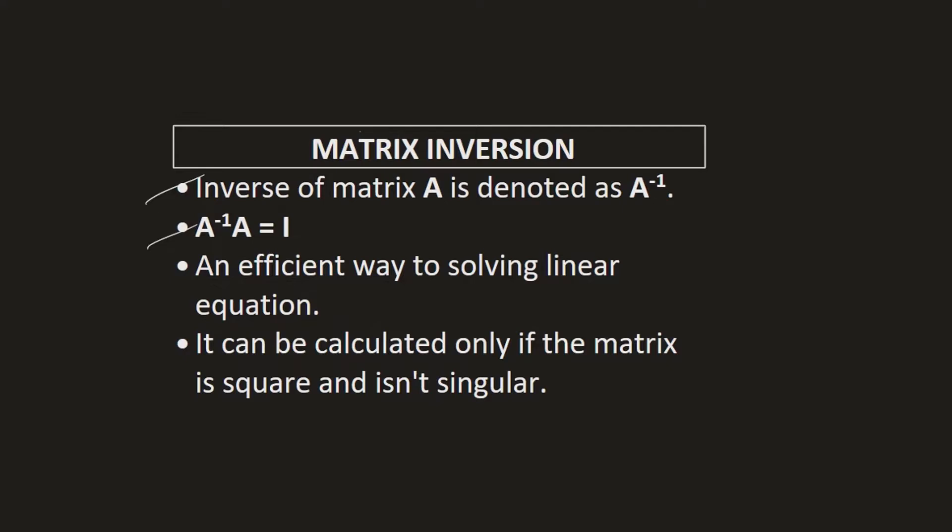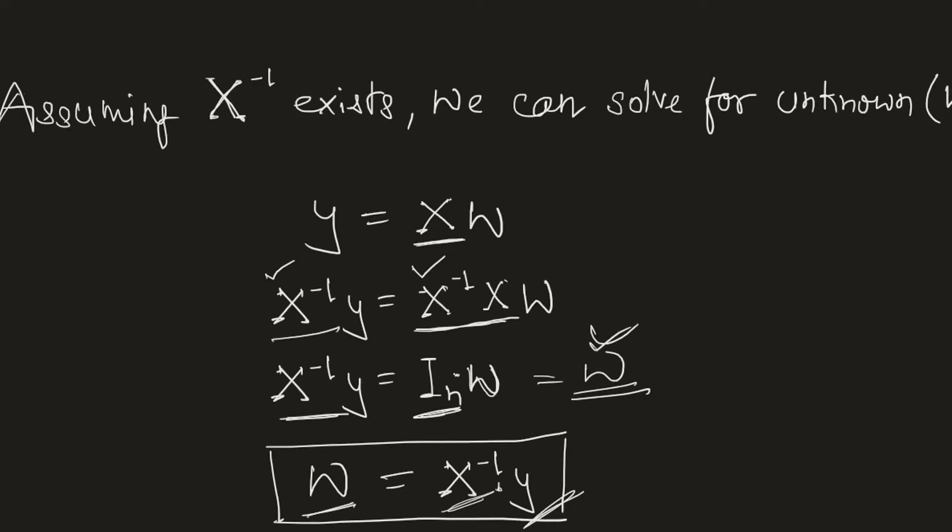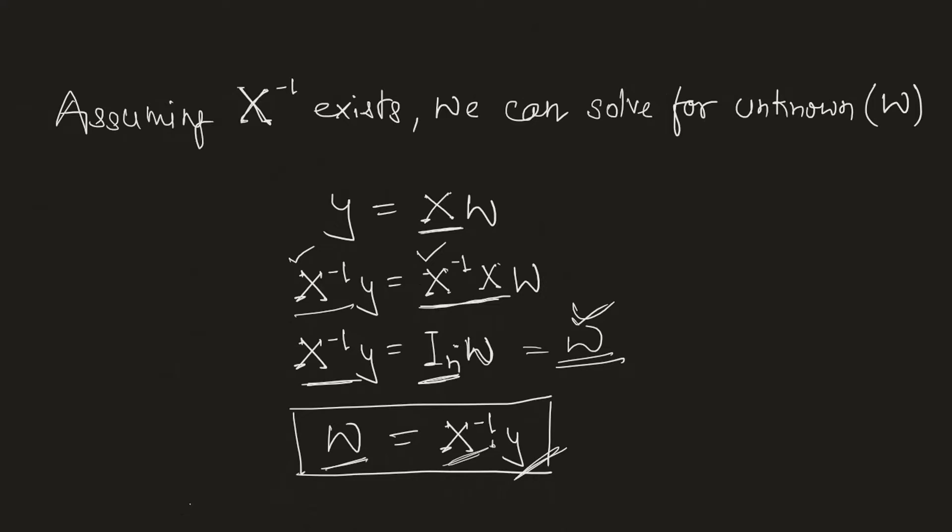This is an efficient way of solving for unknowns in a given linear equation and most importantly it can be calculated only for a matrix which is square and not singular. We also discussed how behind a regression problem, matrix inverse, if it can be calculated, is super useful in order to solve for unknowns which is also called weights in the field of machine learning.